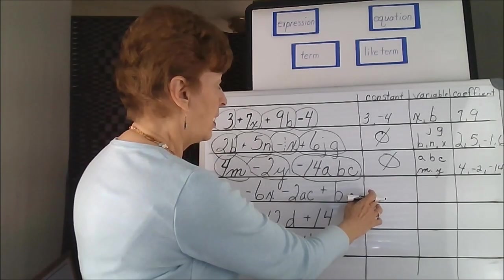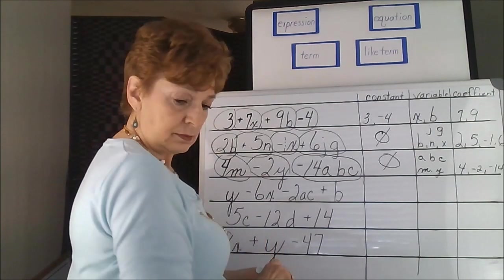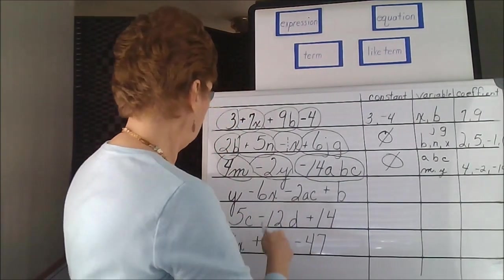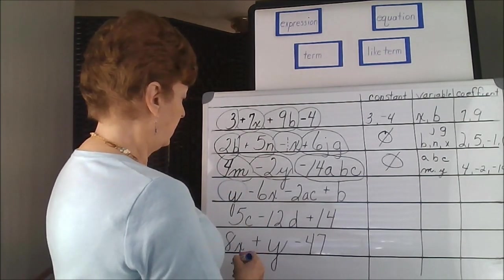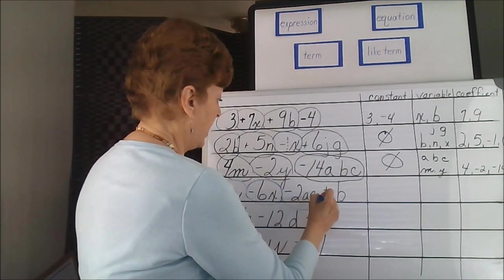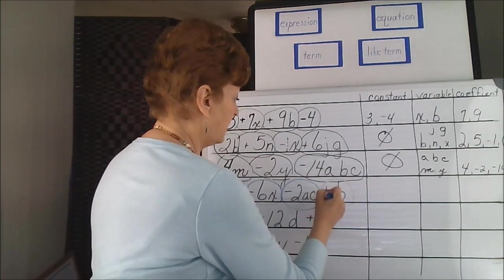We're looking for the terms first of all. Y is a term, negative 6x, negative 2ac, positive b.